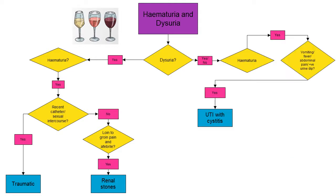Moving on to a patient who may or may not have dysuria, but they do have haematuria. They also have vomiting, fever, or abdominal pain with a positive urine dip. We can put this down to a UTI.